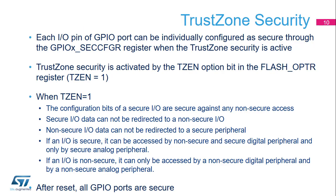Each I/O pin of the GPIO port can be individually configured as secure when TrustZone security is active. TrustZone security is activated by the TZen option bit in the Flash OPTR register. When TrustZone security is active, the configuration bits of a secure I/O are secure against any non-secure access. Secure I/O data cannot be redirected to a non-secure I/O, and non-secure I/O data cannot be directed to a secure peripheral. If an I/O is secure, it can be accessed by non-secure and secure digital peripherals, and only by secure analog peripherals. If an I/O is non-secure, it can only be accessed by a non-secure digital peripheral and by a non-secure analog peripheral. After reset, all GPIO ports are secure.